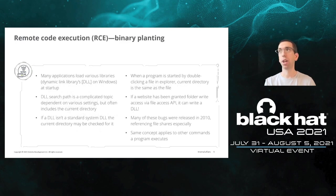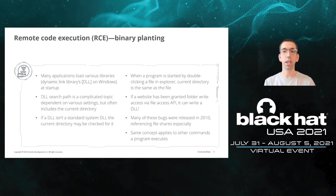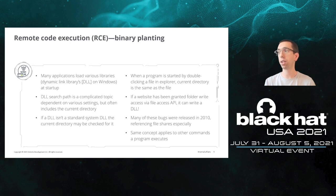Now let's talk about remote code execution attacks. The first is binary planting — a technique useful in exploits going back more than 10 years. Many applications load various libraries, usually DLLs on Windows. If loading a non-standard DLL and it isn't in a higher-level search path, the program will try to load it from the current working directory. So if you can write a DLL to that directory, it will get loaded and executed. Surprisingly, DLLs are not on the excluded list, making this a significant attack vector.